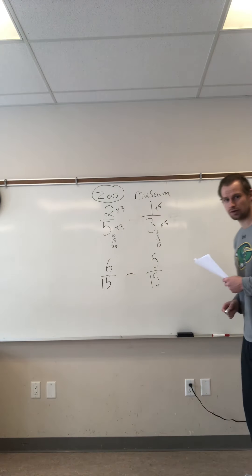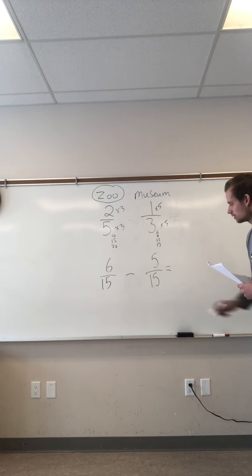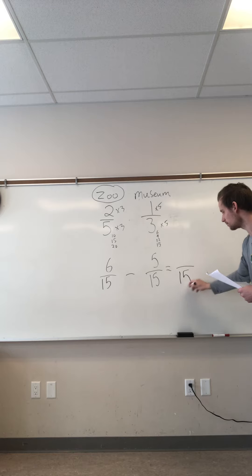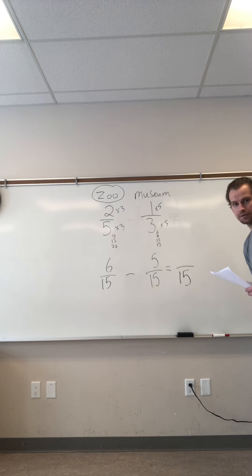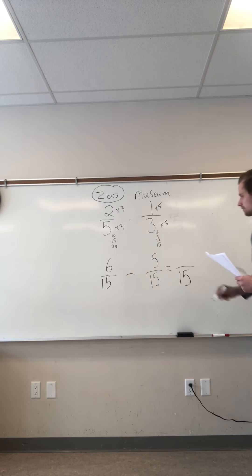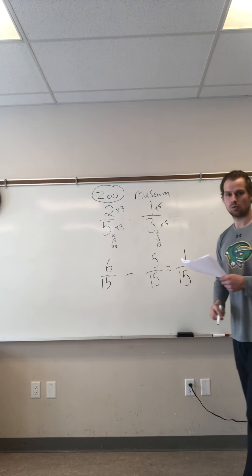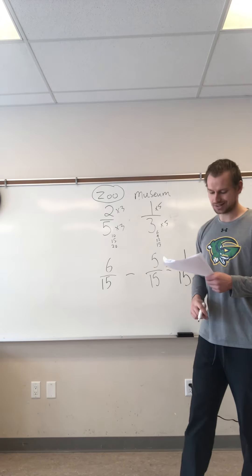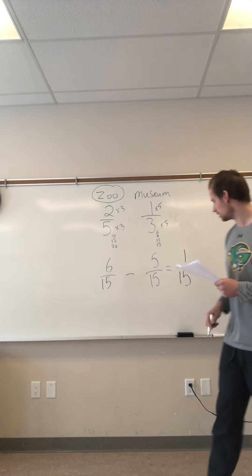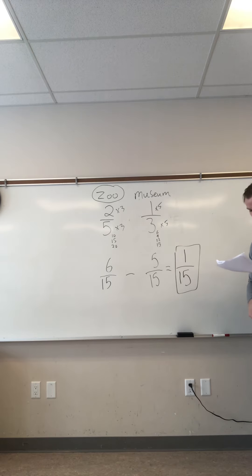They are now easier to compare because you have the same denominator. Which one looks bigger? Who had more votes? Well, six over fifteen has one more vote than five over fifteen. So for part A, who had more votes — it is the zoo.